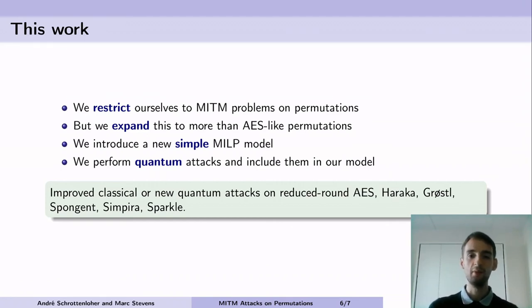This allows us to find improved classical attacks or new quantum attacks on several primitives such as reduced round AES, Haraka, Grøstl, Spongent, Simpira, and Sparkle.